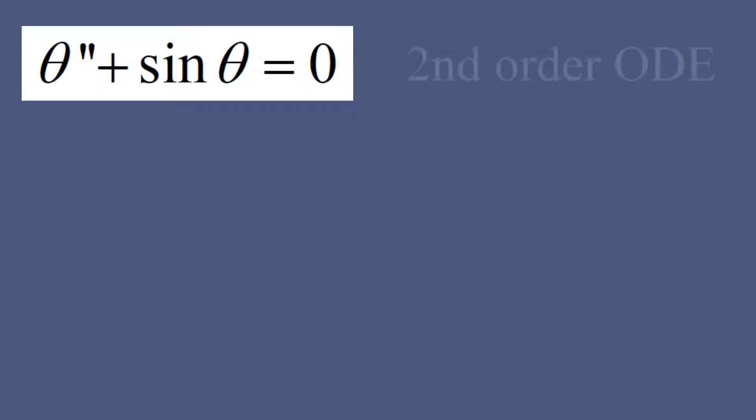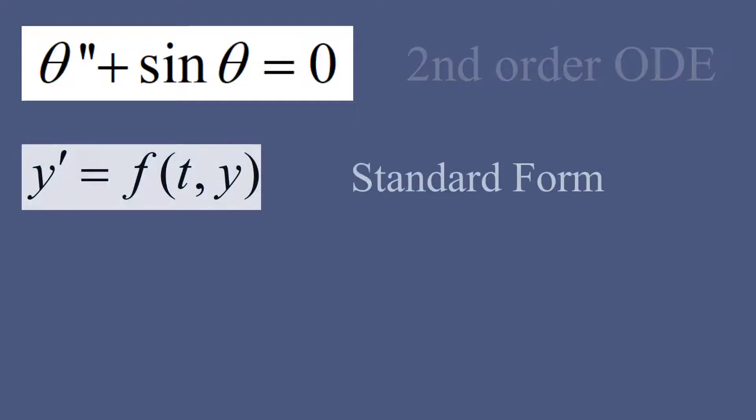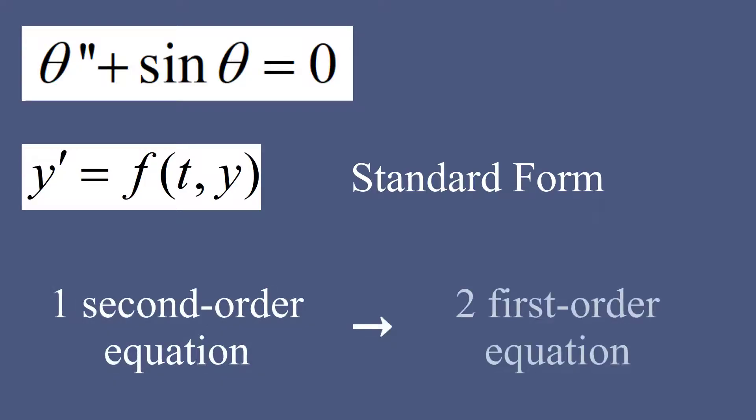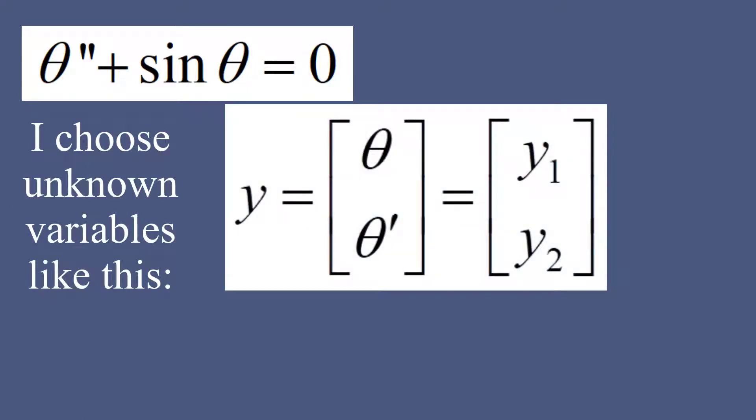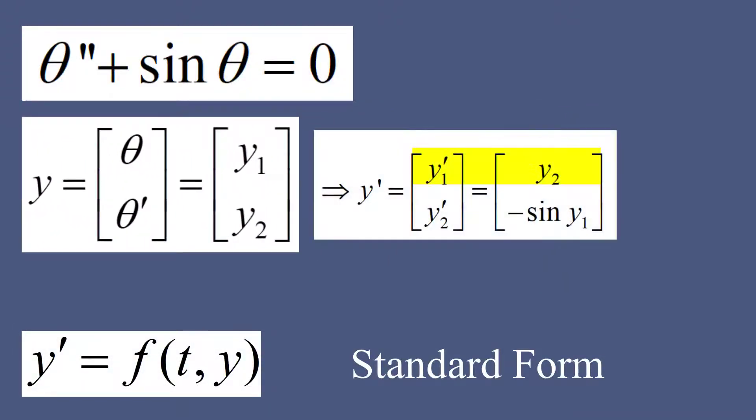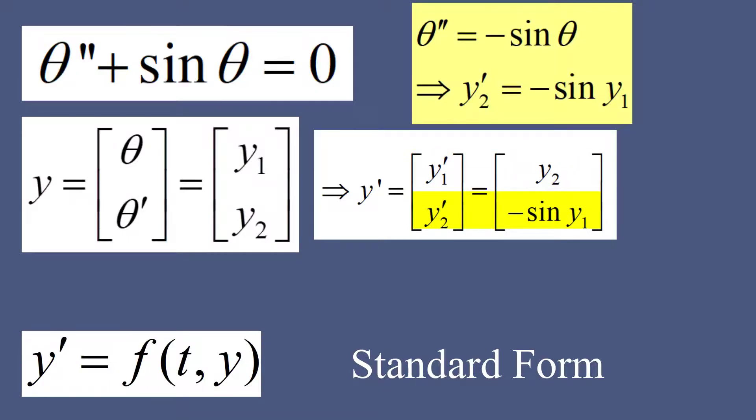The next part is solving a second-order differential equation. As I have mentioned multiple times, this is the general form of equation that ODE45 solves. But how can I write a second-order differential equation in this form? The trick is to decompose this second-order equation into two first-order equations. My two unknown variables are going to be theta and theta prime. To avoid confusion, I rename them y1 and y2.